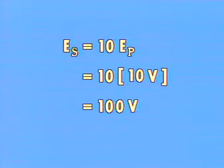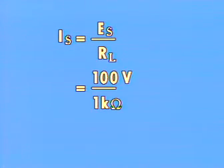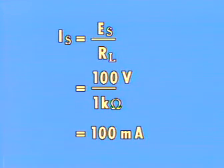If a 1,000 ohm load were placed across the secondary, then the secondary current, according to Ohm's law, would be E secondary divided by R sub L, or 100 volts divided by 1,000 ohms, which equals 100 milliamps. The secondary winding acts as an AC source to R sub L.